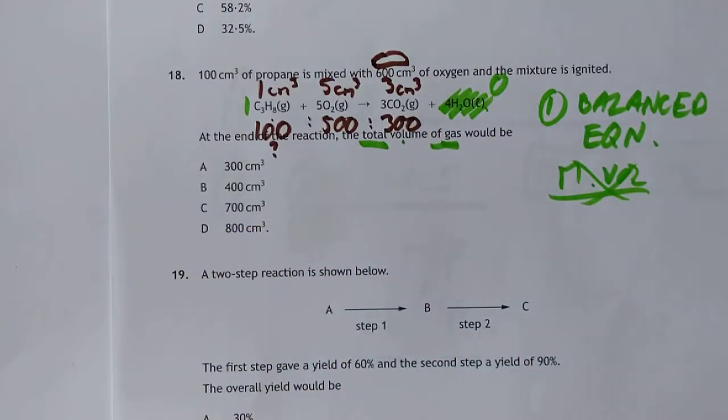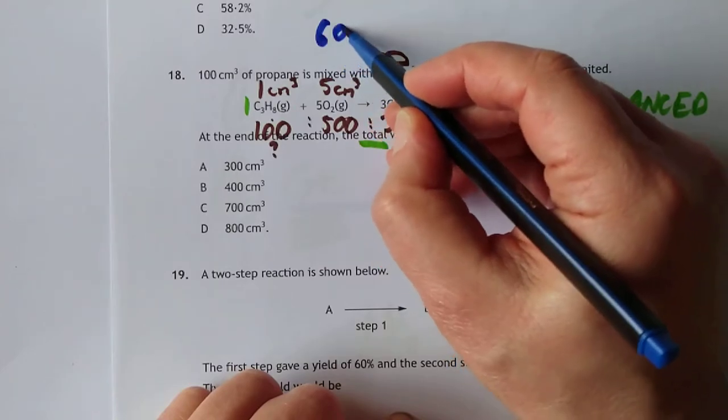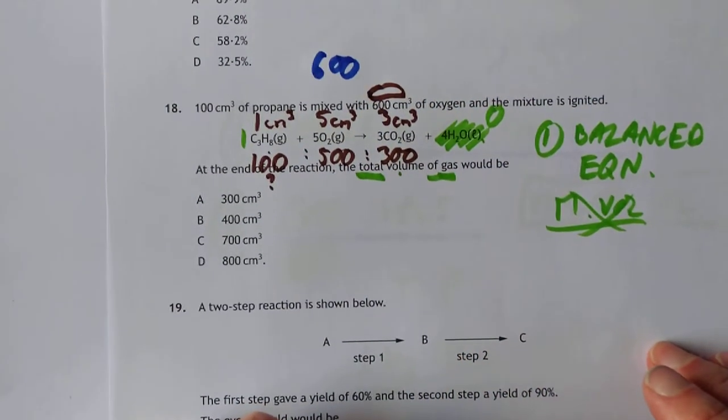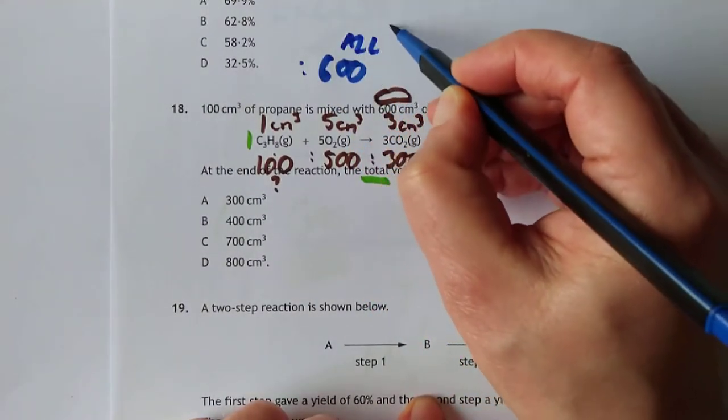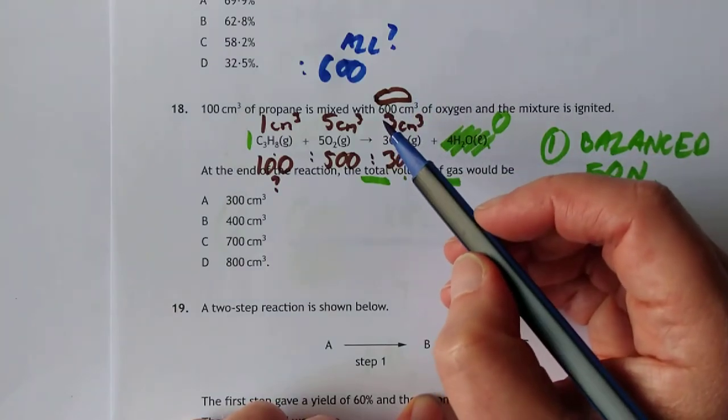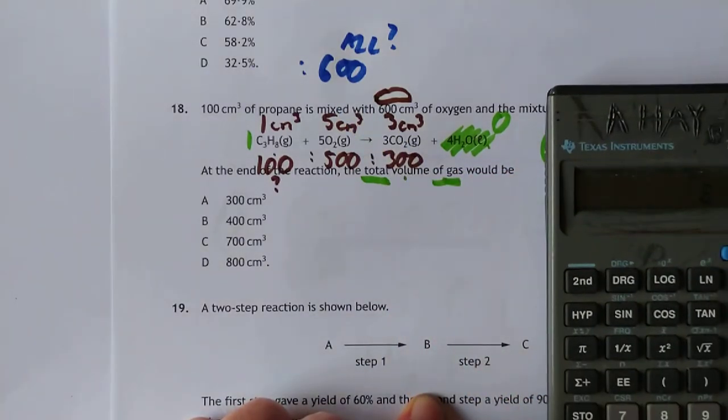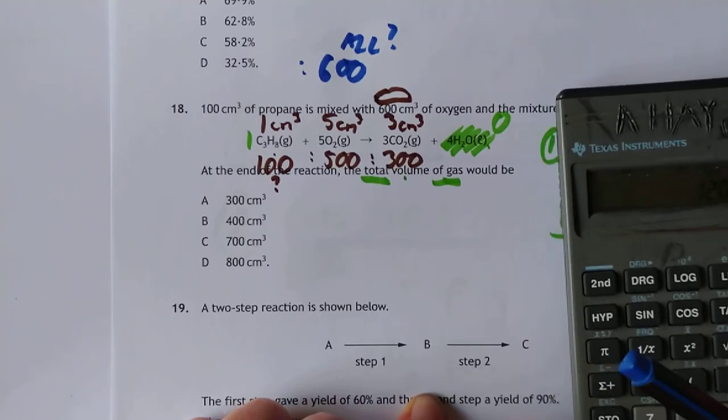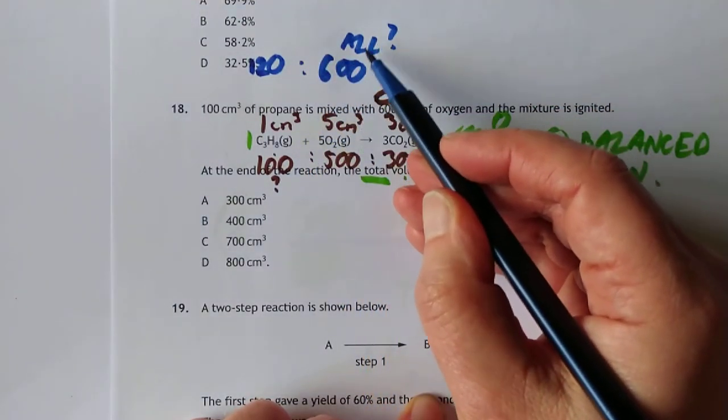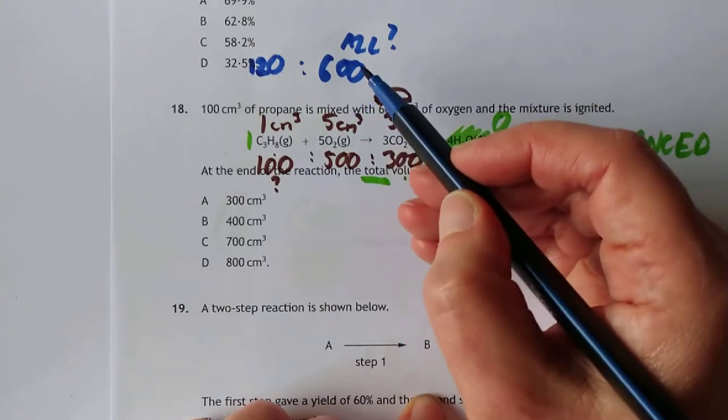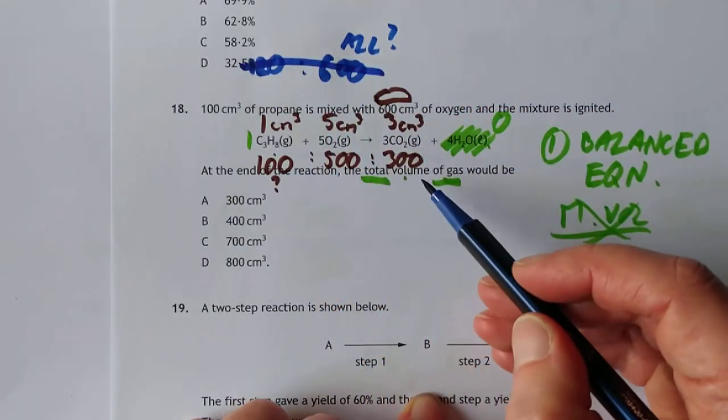If we had gone the other way, if we'd said 600 of this, can we use all of this up? You would have needed, it's 1 to 5, so 600 over 5, you would have needed 120 of the propane. This is the technique I showed you in the other excess question. No, we can't do that because we only have 100. This does happen.